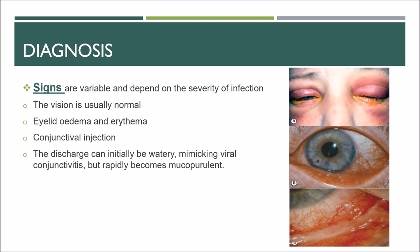Signs are variable and depend on severity of infection. Visual acuity in both eyes is usually normal. Eyelid edema and erythema may occur in severe infection, particularly gonococcal, as seen in the first picture — both lids are swollen with marked erythema.